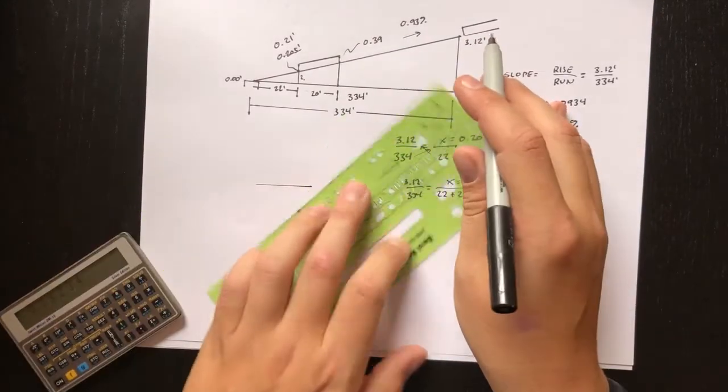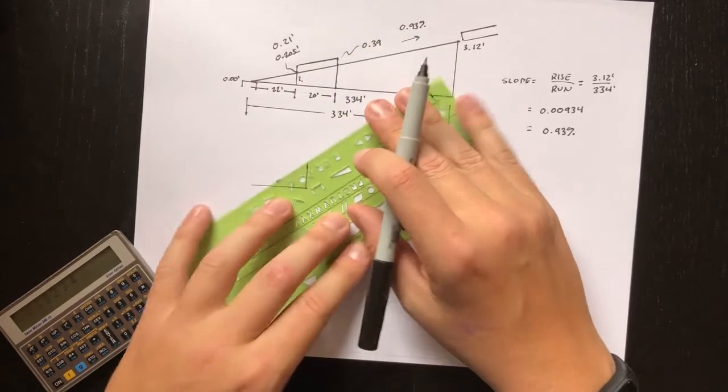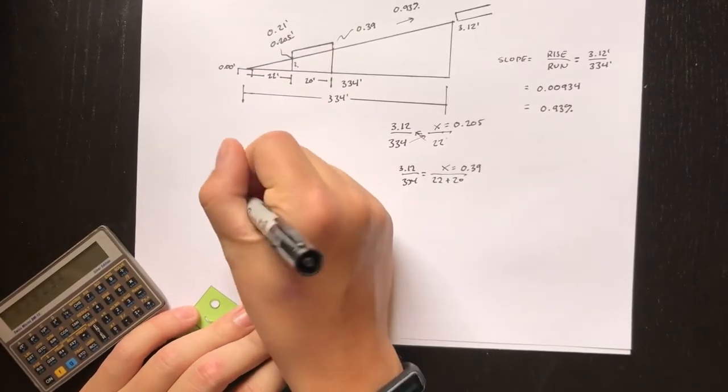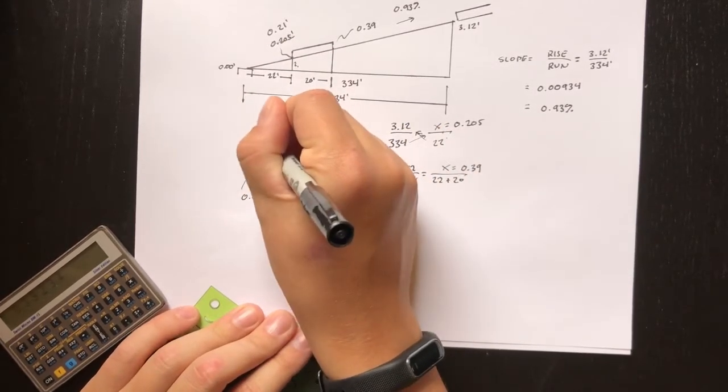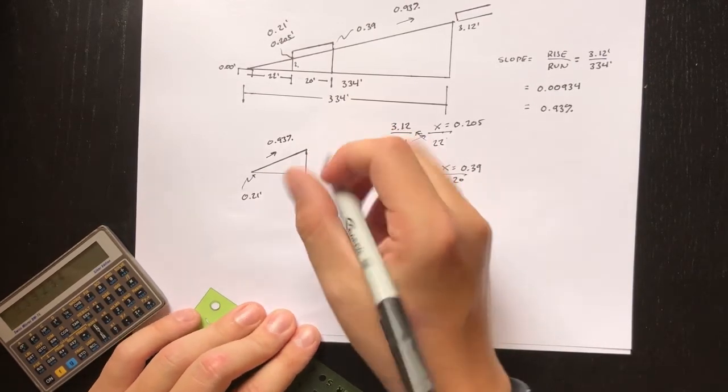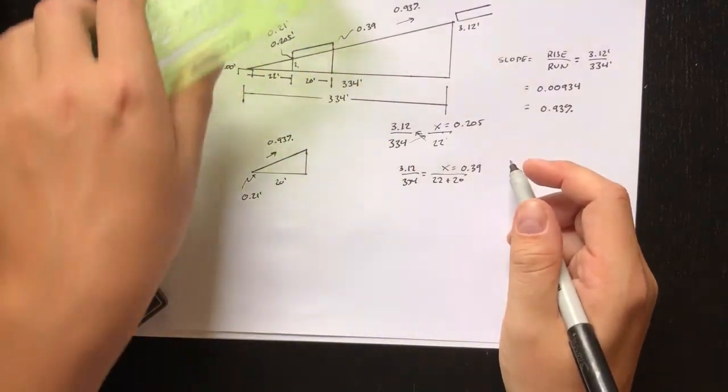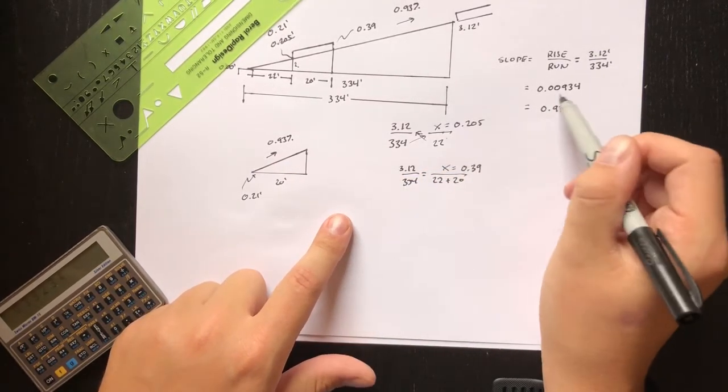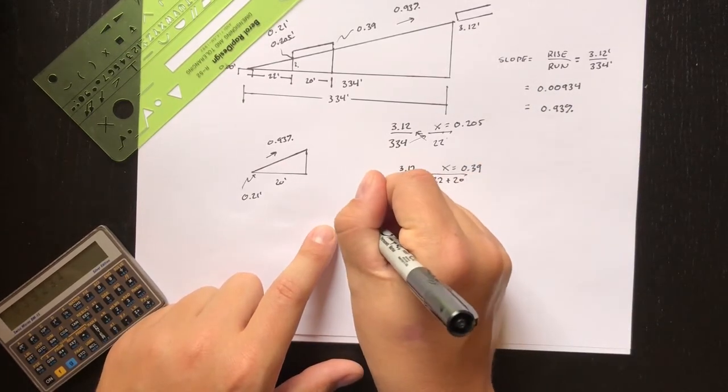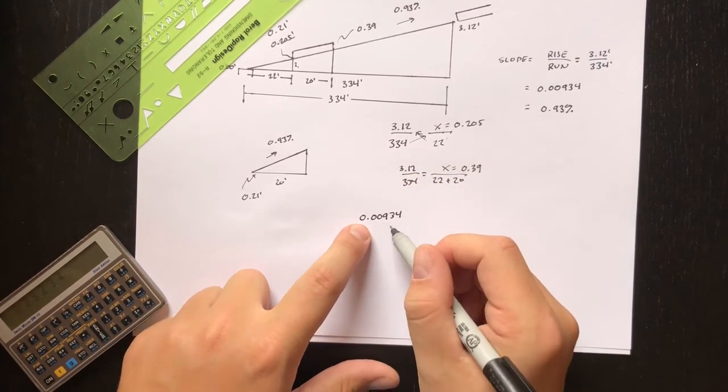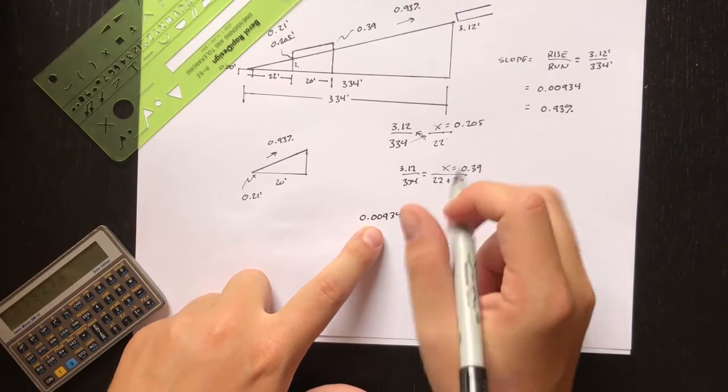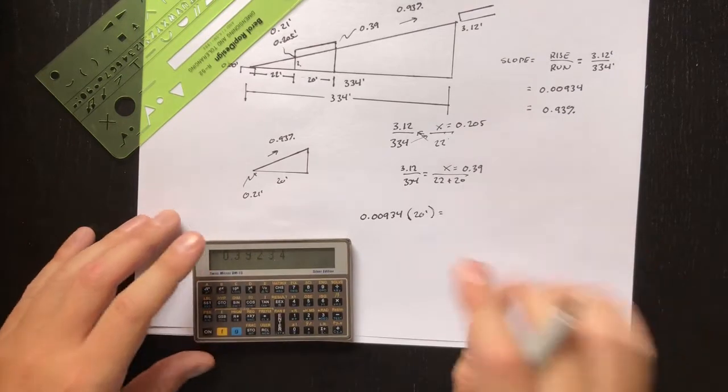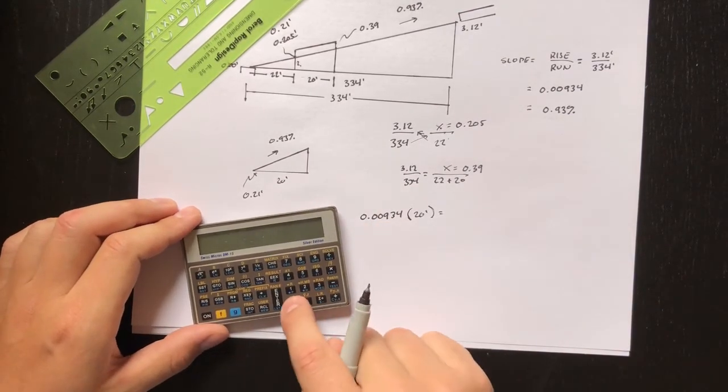You've got your elevation set to 0.21 feet and you're trying to figure out where this other point is 20 feet away. In my head, I'm picturing a little triangle here. We know this point is 0.21 feet. We know that the slope is 0.93%. While we're out in the field, we're trying to figure out what this elevation is. We also know this is 20 feet. Grade is just rise over run. We take our percentage and convert it back into a decimal by dividing by 100. So 0.00934 is how much the ground rises for every foot of run. We can multiply this grade by how far we're running, which is 20 feet. If we multiply the slope by the run, we should get the rise.